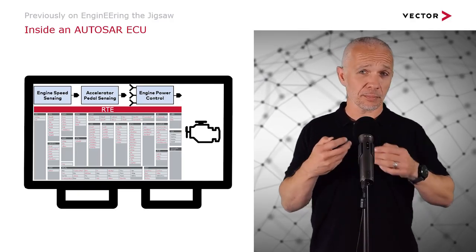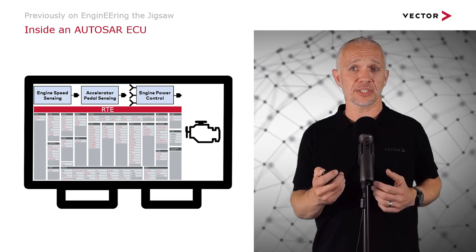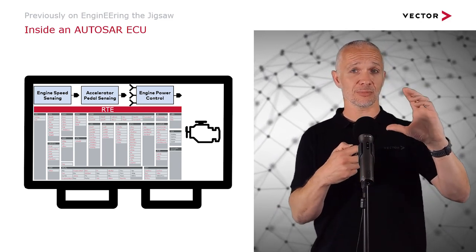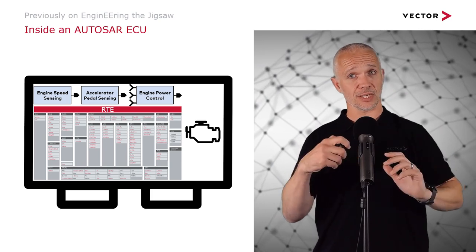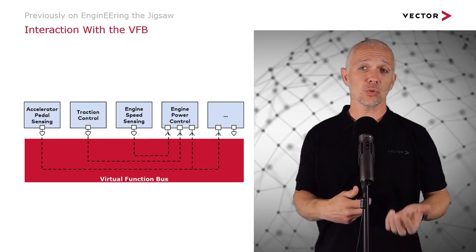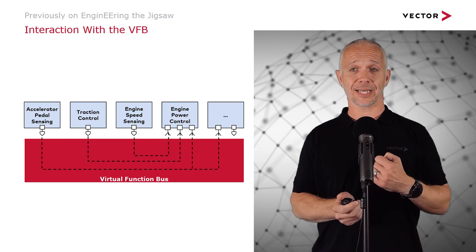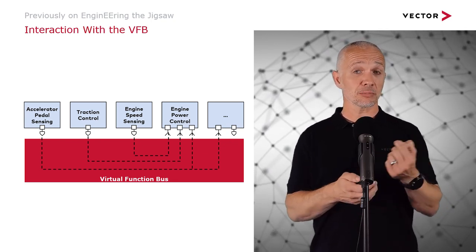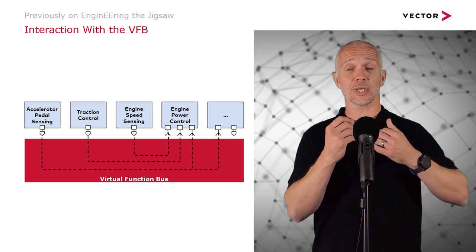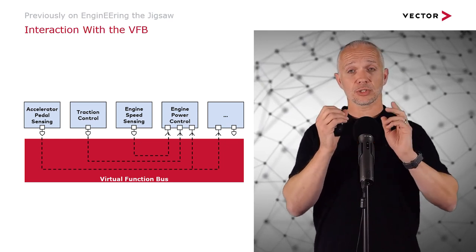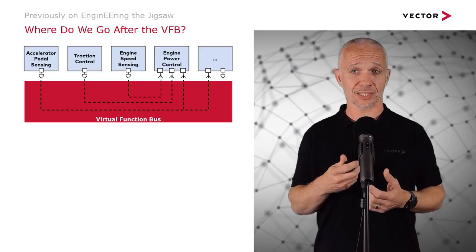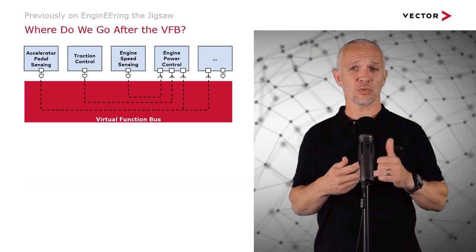Previously on Engineering the Jigsaw, we've taken a little bit of a peek inside an AUTOSAR ECU and we've talked about how the application sits on top of the runtime environment or RTE, and then the basic software sits beneath it. We've also talked about how application software components interact with the virtual function bus, and this is how we describe our software in the first step of our design process in the AUTOSAR Classic methodology.